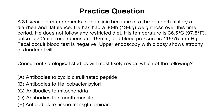Key features here include a three-month history of diarrhea and flatulence — a chronic GI presentation consistent with celiac disease — as well as chronic weight loss, indicating malabsorption. The patient does not follow a restricted diet, so he is likely exposed to gluten. The confirmatory finding is the upper endoscopy showing atrophy of duodenal villi. The correct answer is anti-tissue transglutaminase antibodies, which is the preferred serological test for diagnosing celiac disease.